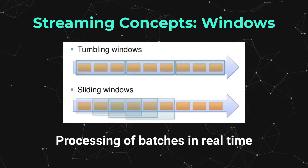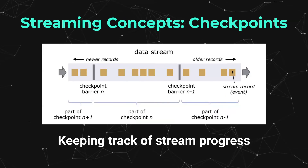Diving into the stream processing concepts, we can see a lot of terminology used in this area. You may have already come across the concept of windows: basically you have a stream of data and you may want to perform some stateful processing across a specific start and end of that stream. This can be tumbling windows, which don't intersect, or sliding windows that take a start and end sliding across the incoming data. You also have the concept of checkpoints, which allow you to know exactly where to continue from if the processor dies.